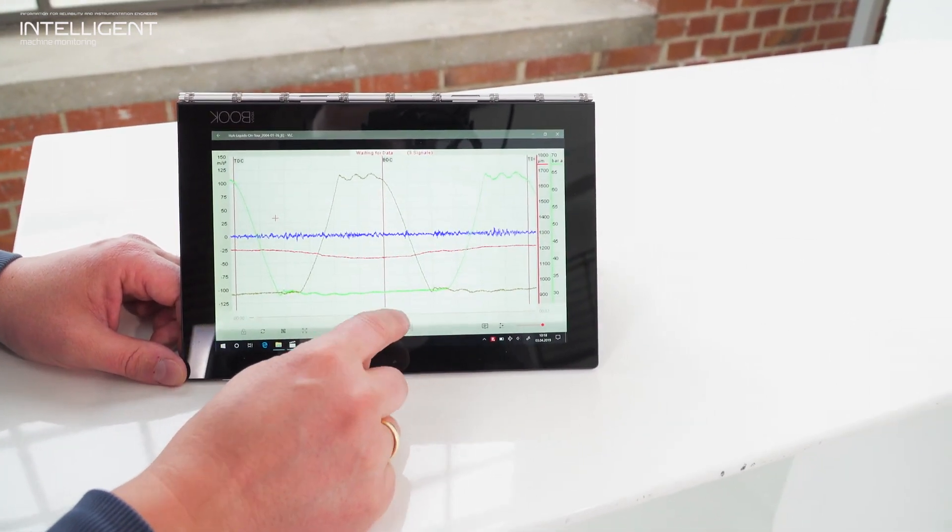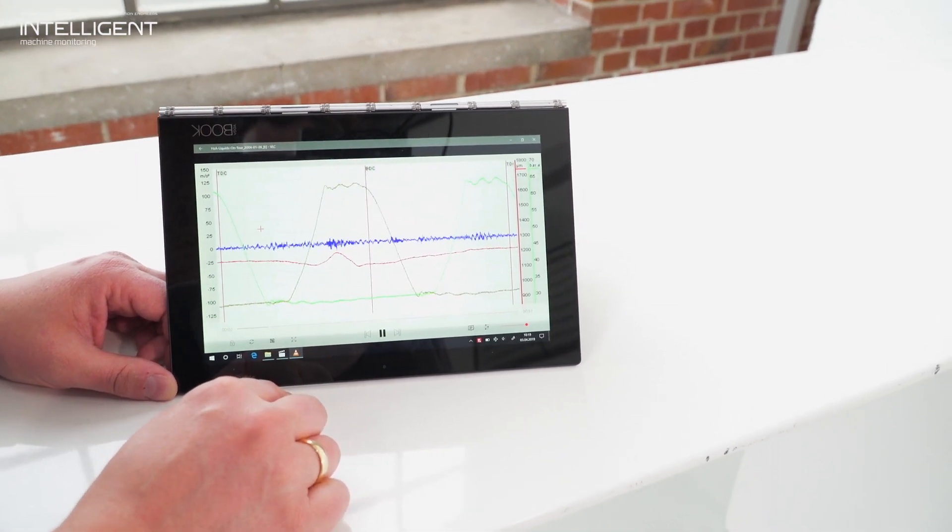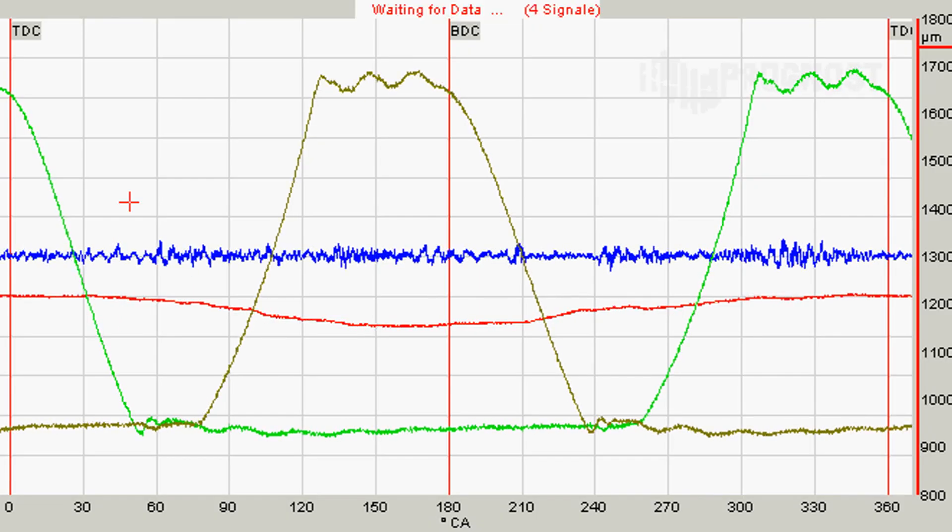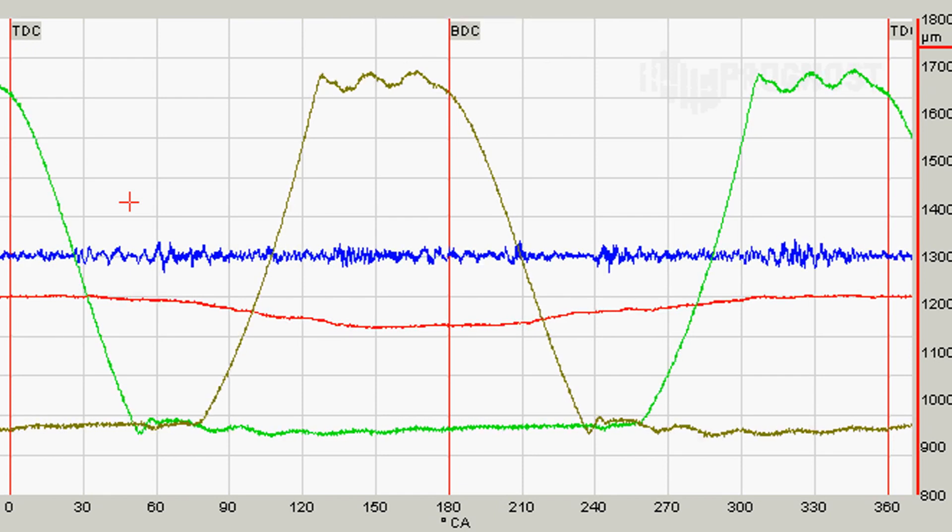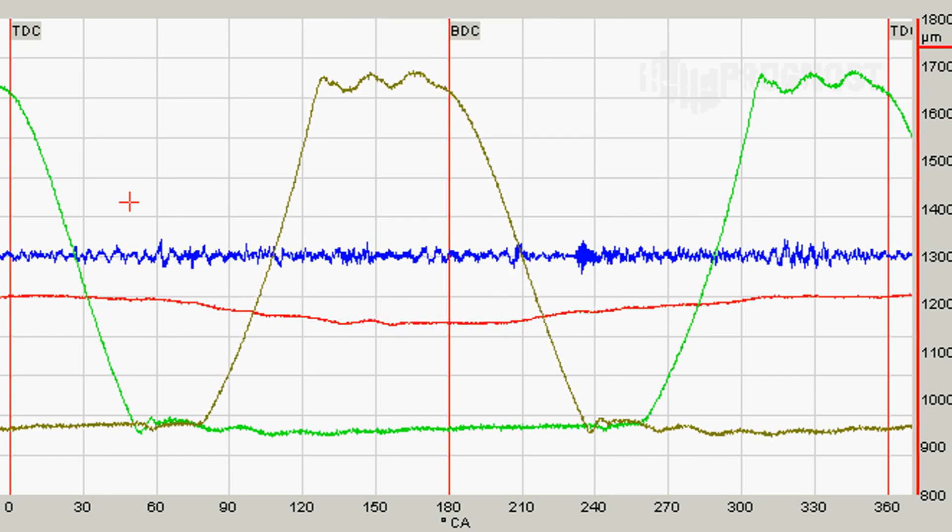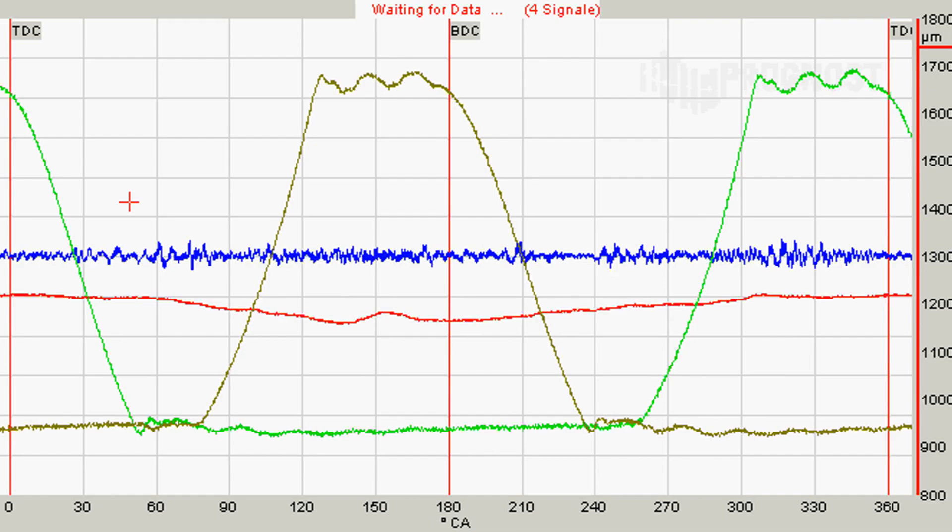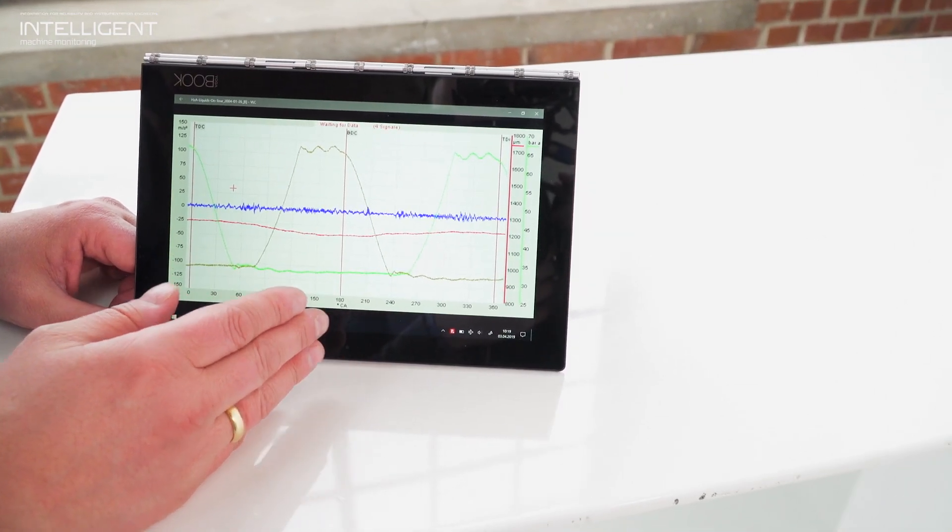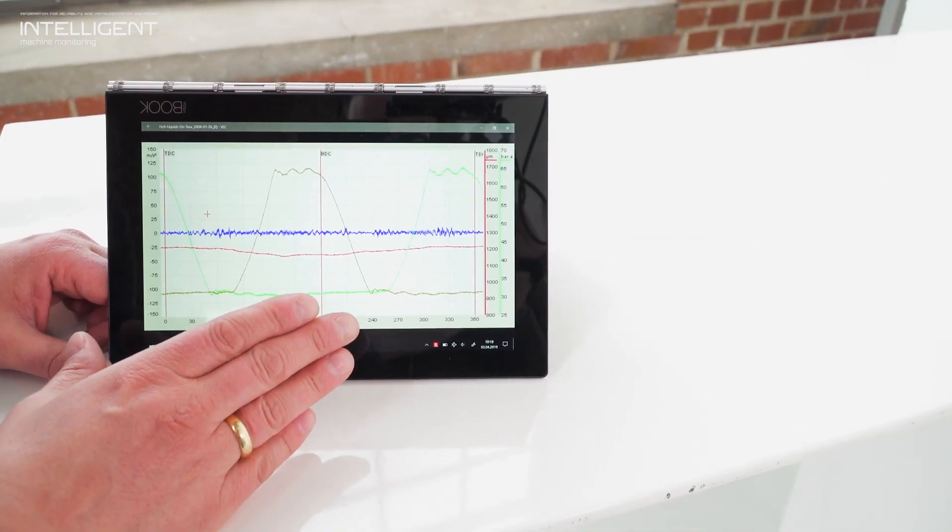So as explained, we will run the compressor with 420 rpm. That means you will have only a short time which the liquid carryover occurred. Everything is in normal mode currently.